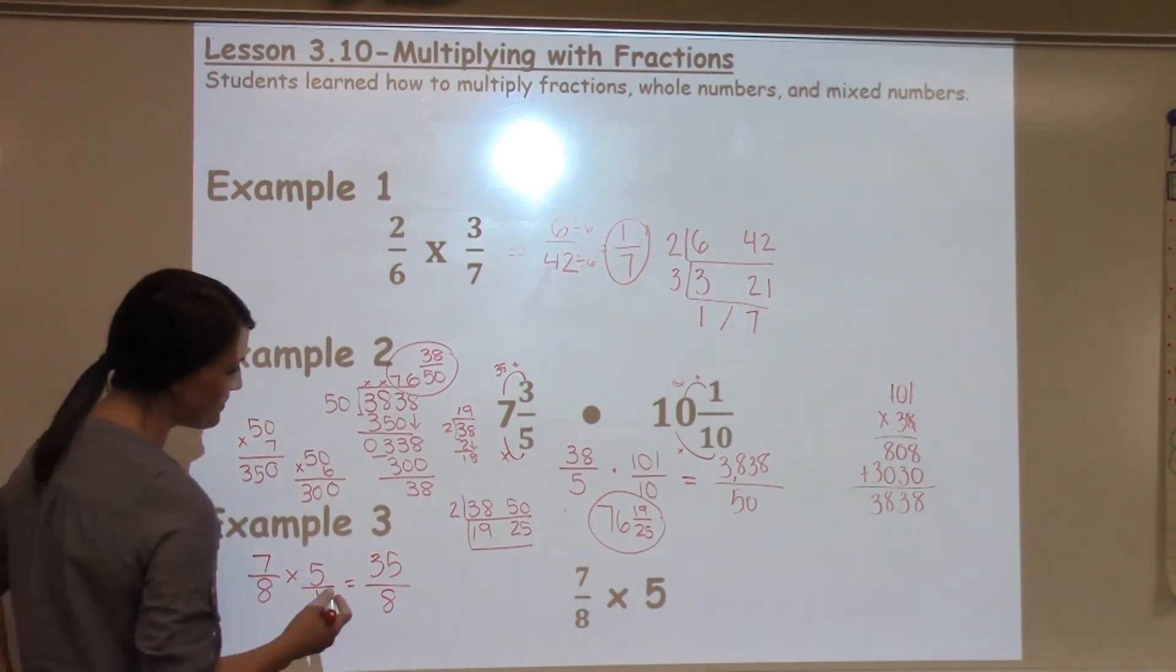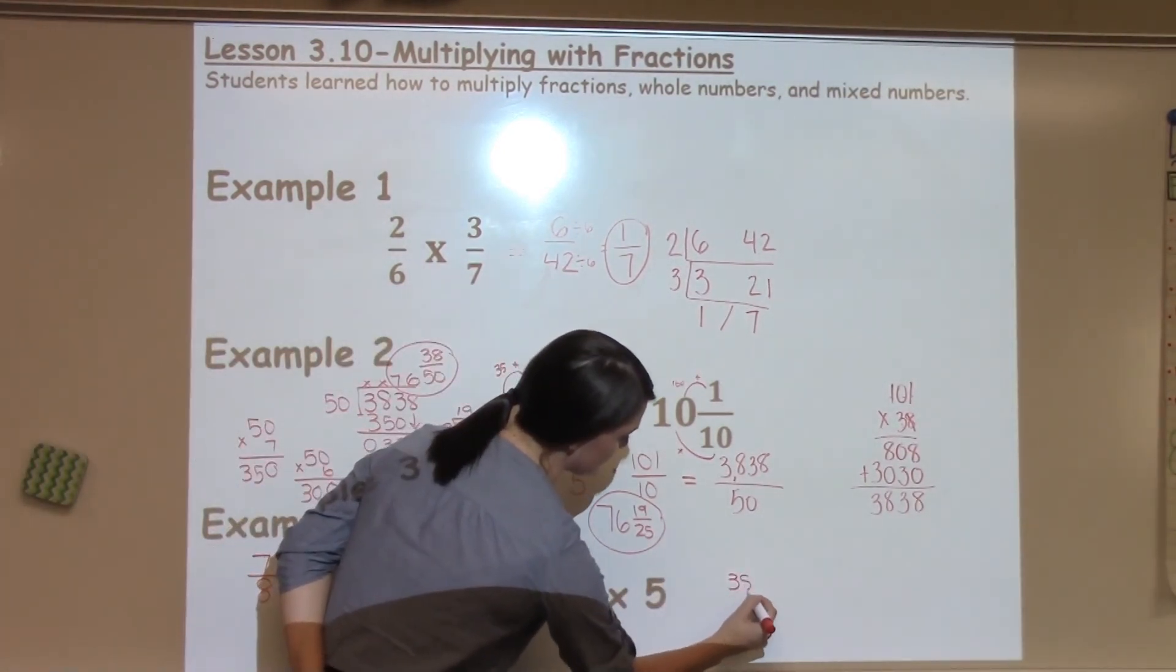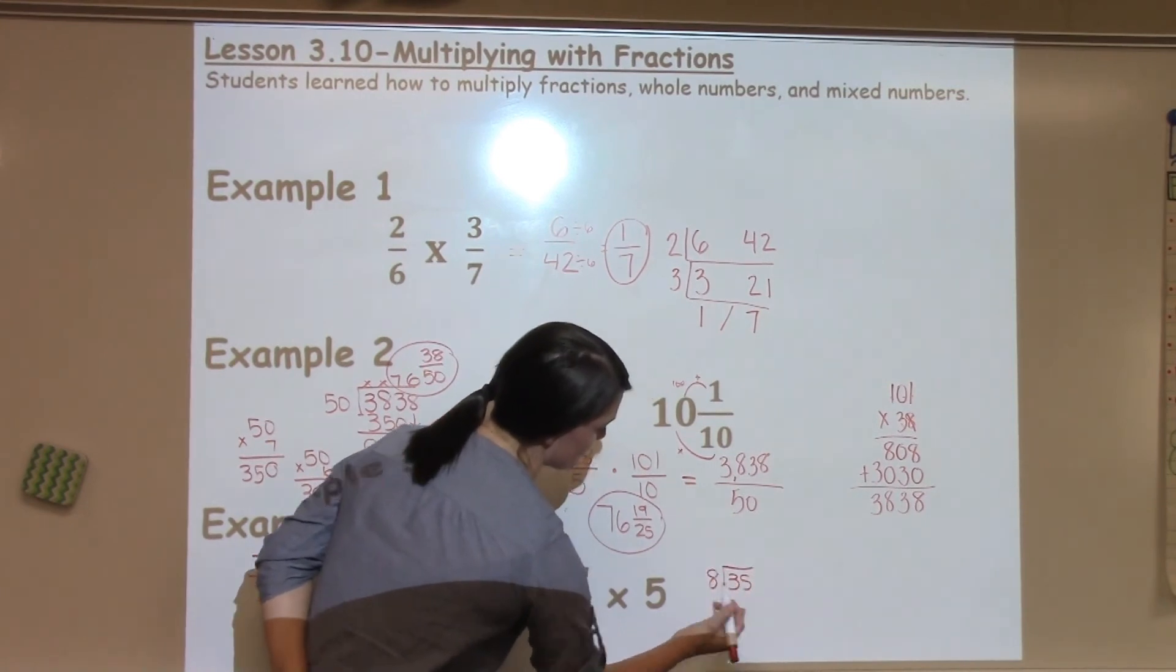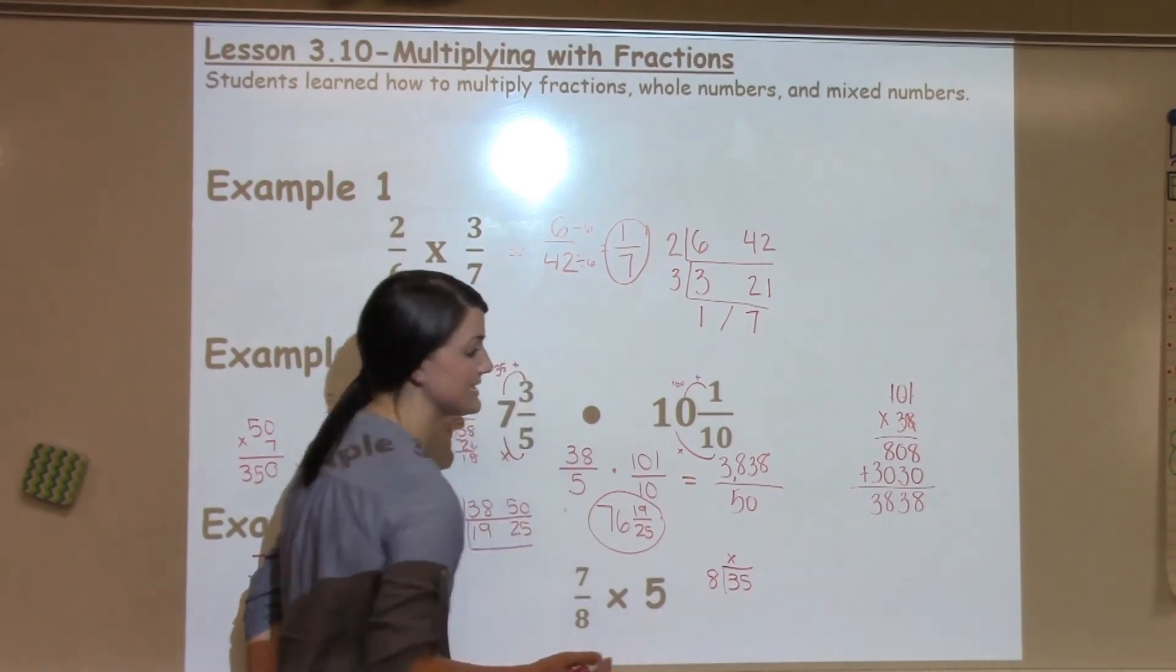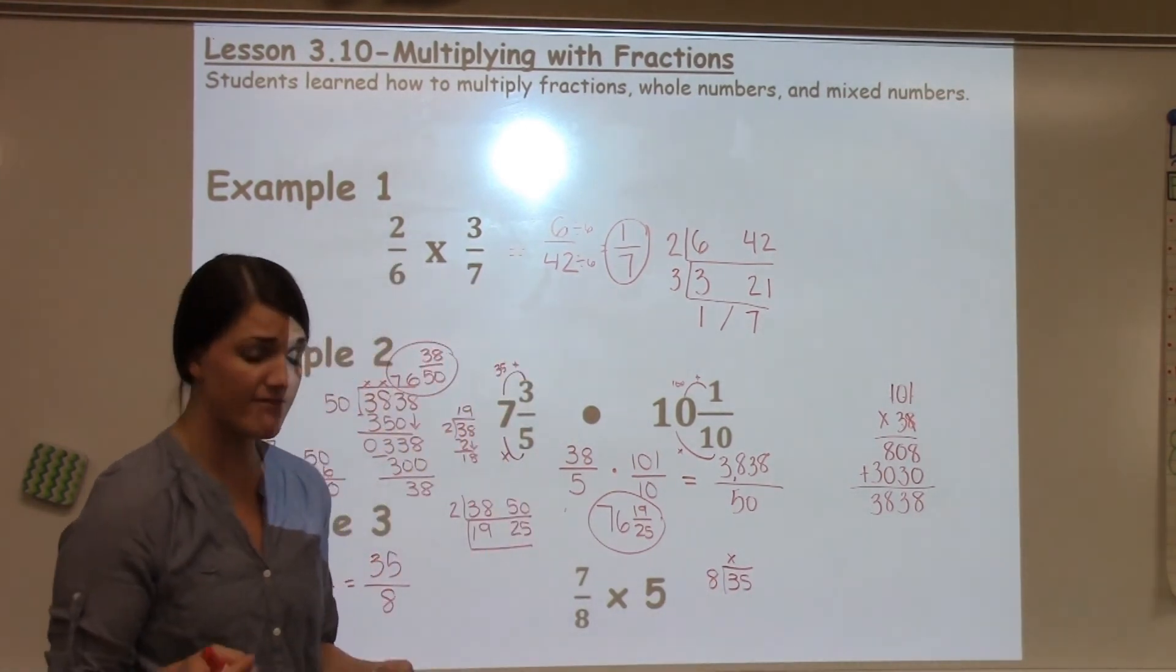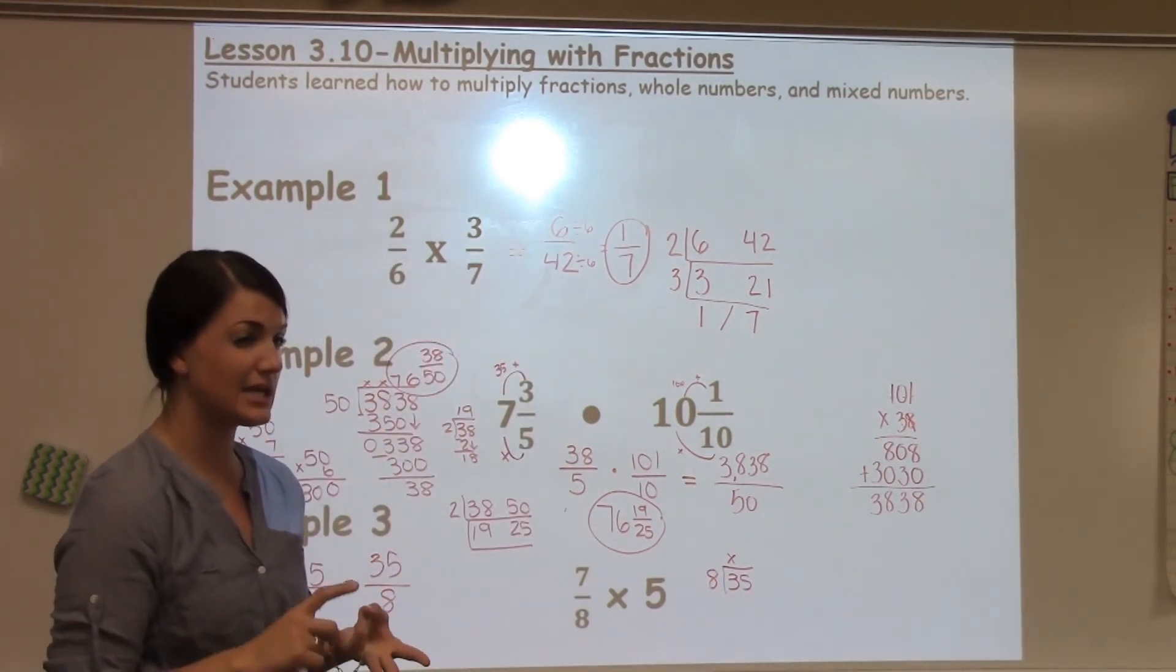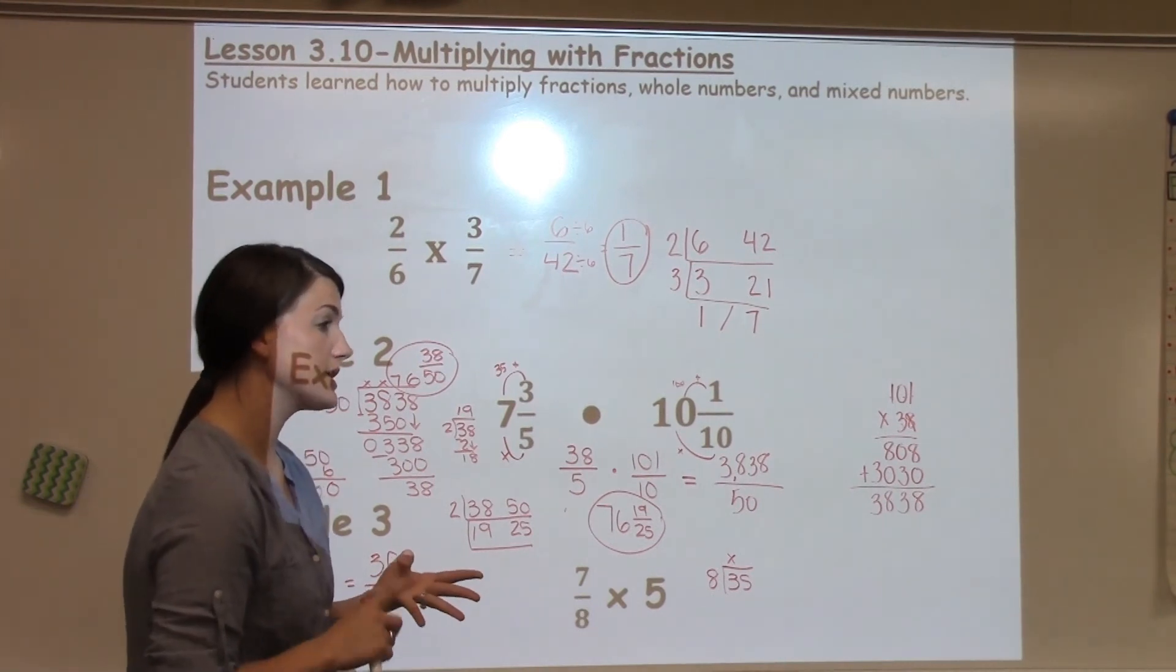Of course, that is too big. The top's too big for the bottom, so I have to take the top number, divide it by the bottom number. 8 cannot go into 3, so I have to count by 8s and see how close can I get to 35 without going over. 8, 16, 24, 32.